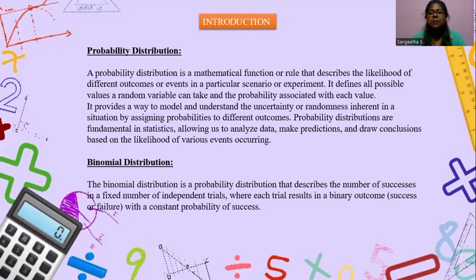A probability distribution is a mathematical function that describes the likelihood of different outcomes or events in a particular scenario or experiment. It defines all possible values a random variable can take and the probability associated with each value. It provides a way to model and understand uncertainty or randomness by assigning probabilities to different outcomes. Probability distributions are fundamental in statistics, allowing us to analyze data, make predictions and draw conclusions based on the likelihood of various events occurring.